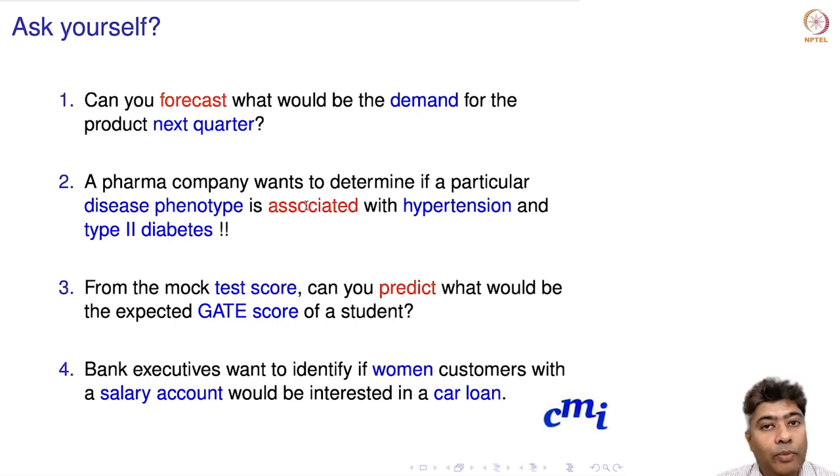This particular problem can be approached by two methods. Either you see what the associations and correlations are between these variables—disease phenotype, hypertension, and type 2 diabetes—or you can set up a regression model and from that model, try to figure out if there is any association between these variables. We are not interested in predicting anything, but we will see in the future that the same predictive models can be used for understanding associations between variables.